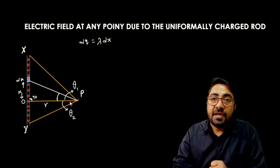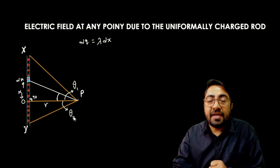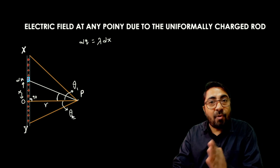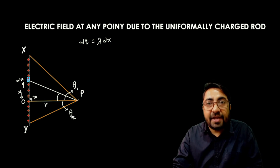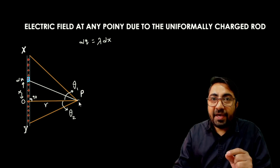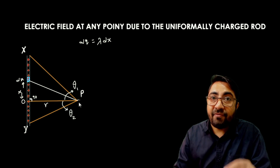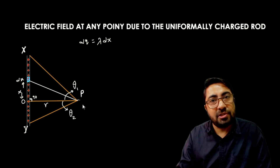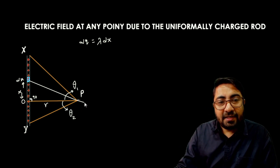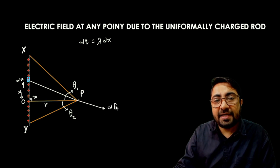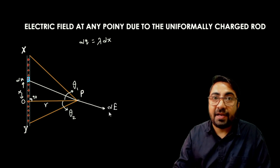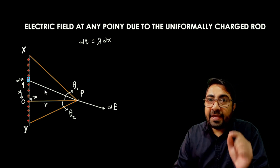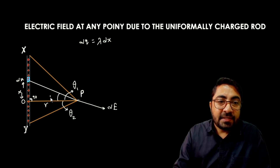I have considered limits theta 1 and theta 2. Theta 1 and theta 2 angles correspond to the height of the wire. Due to the small element having small charge dq, the electric field is also small — this is dE, the small electric field. The line joining from DX to point P makes an angle theta.